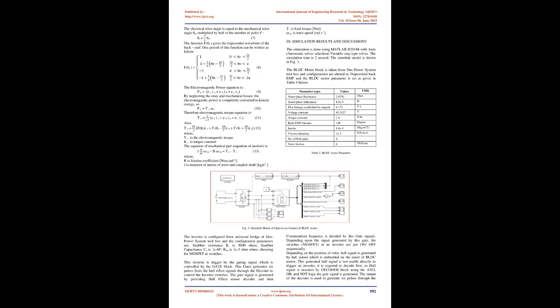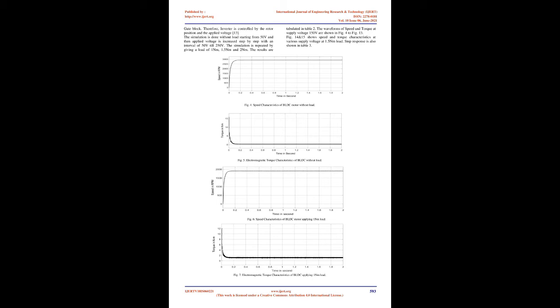The equivalent circuit diagram of the BLDC motor is shown in Fig. 2. The voltage equations of BLDC motor are: VA = RA·IA + LA·(dIA/dt) + EA (1); VB = RB·IB + LB·(dIB/dt) + EB (2); VC = RC·IC + LC·(dIC/dt) + EC (3). Where LA = LB = LC = L are the self-inductance (H); VA, VB, VC are the per-phase stator voltages (V); RA = RB = RC = R are the per-phase stator resistances; IA, IB, IC are the per-phase stator currents (A); and EA, EB, EC are the induced back EMF (V).